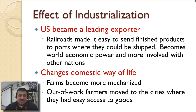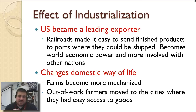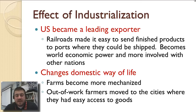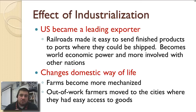What are the effects of industrialization? The U.S. becomes the leading exporter in the world — today we're the leading importer, but back then we exported finished products shipped from ports to other countries. We start to become a world economic power, tying ourselves to other nations through trade. Industrialization also changes our domestic way of life: more machines on farms increase efficiency but put farmers out of work, causing them to move to cities — transitioning life from rural to urban in a process known as urbanization.